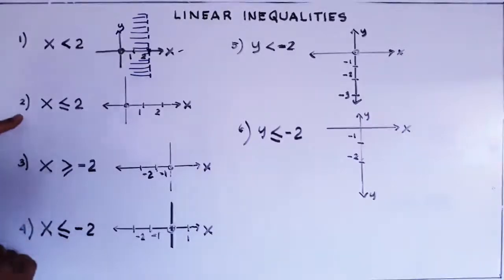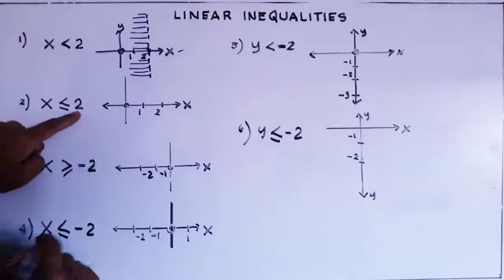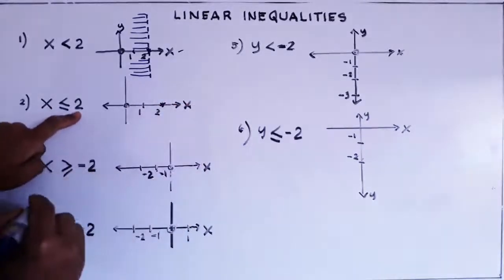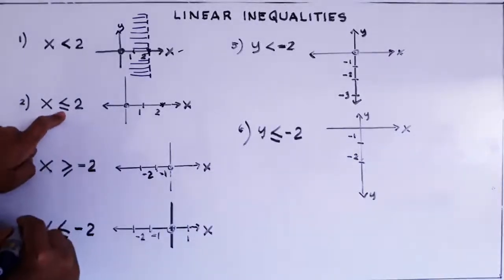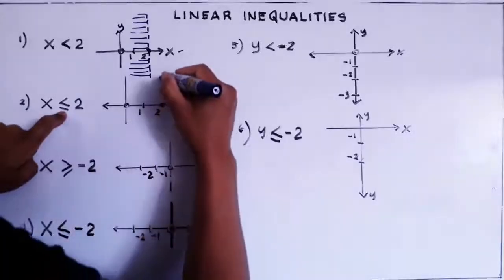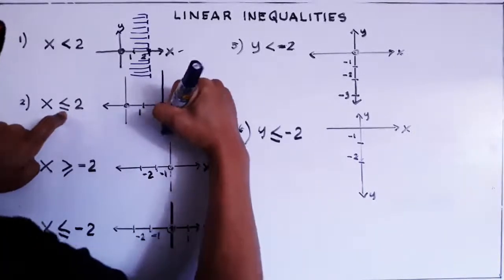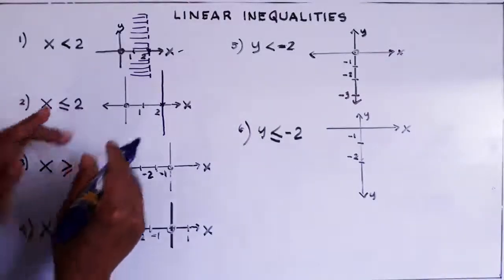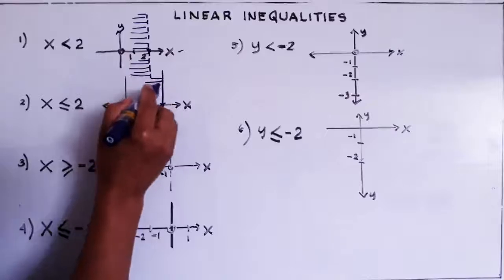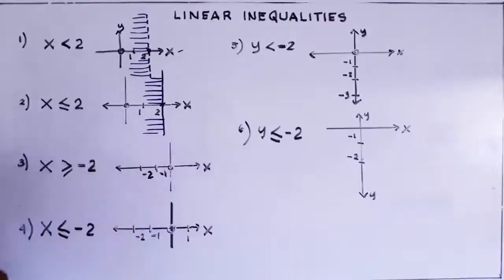Number two. We locate again the two on the x-axis — same position. But this time it has an equal sign: less than or equal to two. So we need a visible line here — a solid vertical line, not dotted. Then we shade where x is small, so small is going to the left — we shade here.